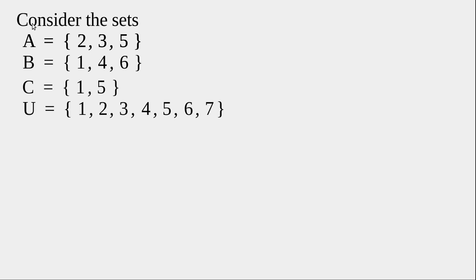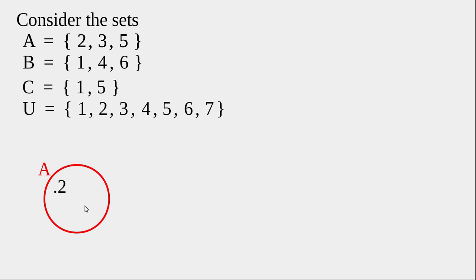For that, first we draw a circle and name it A, then write 2, 3, and 5 inside the circle. Each point represents a single element — this is not point two but the number two. So 2, 3, 5 are the three elements in set A.